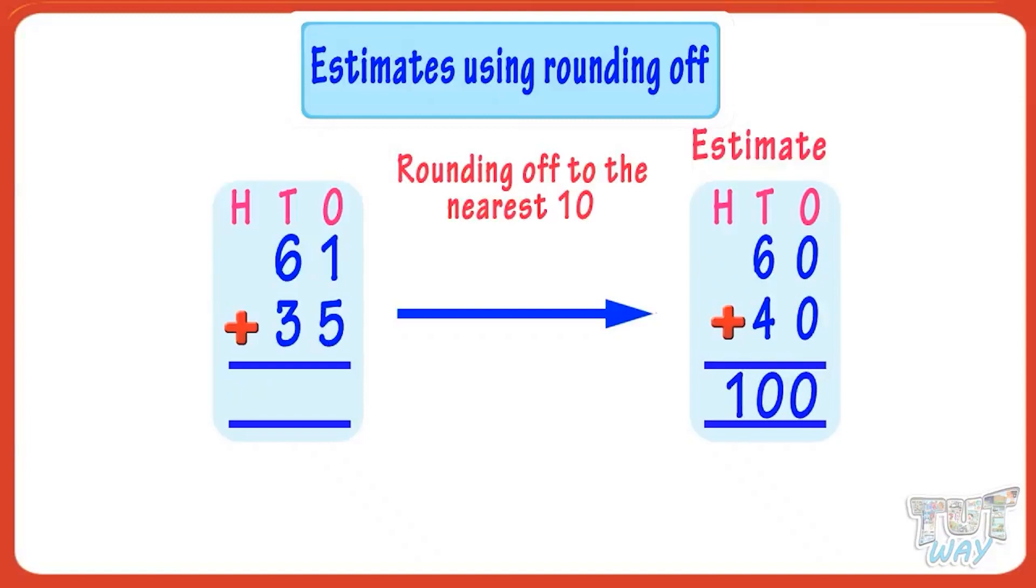If you actually add 61 and 35, you get 96. So our estimate is very close to the actual sum.